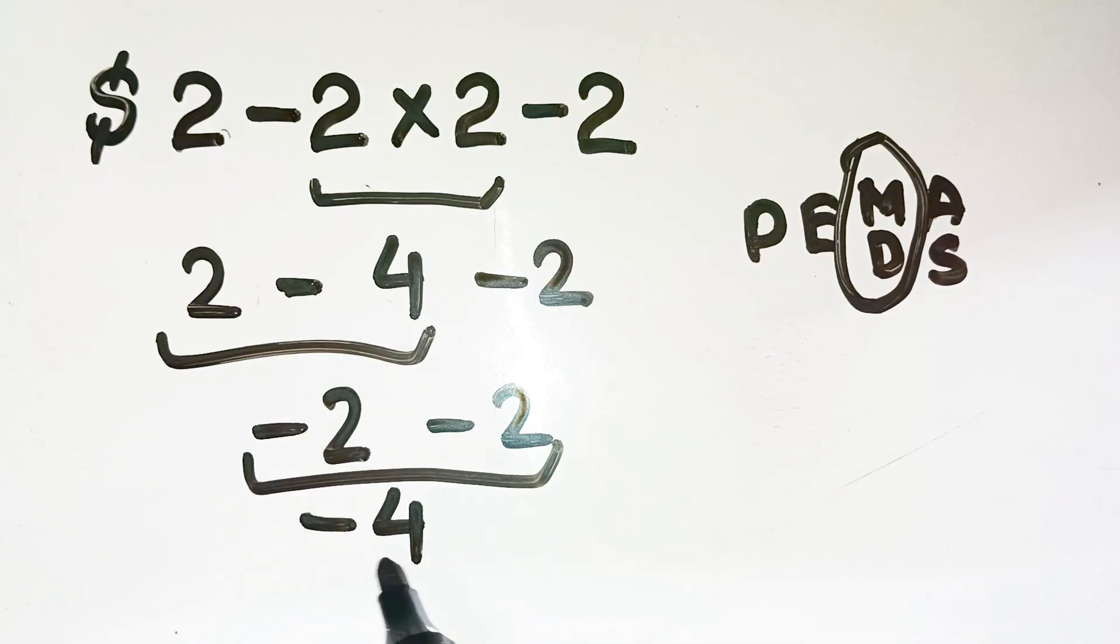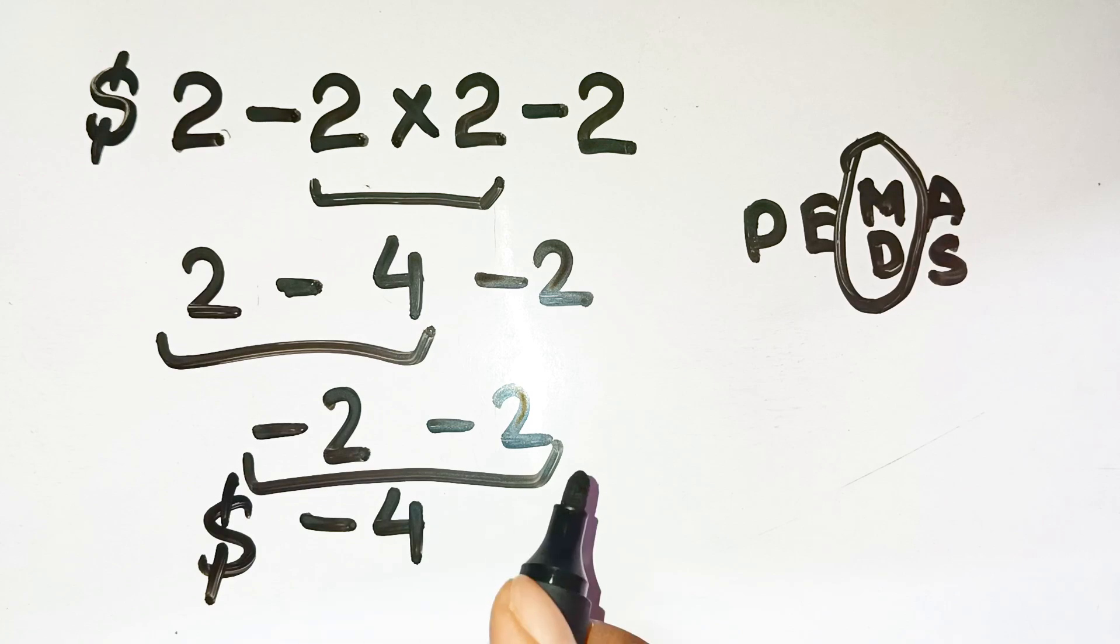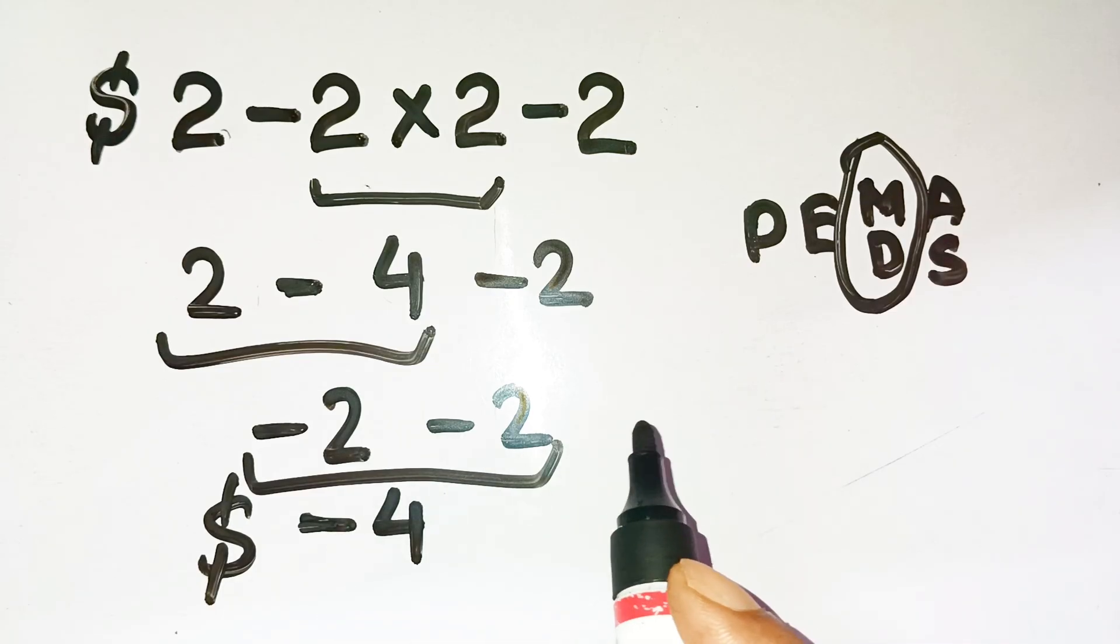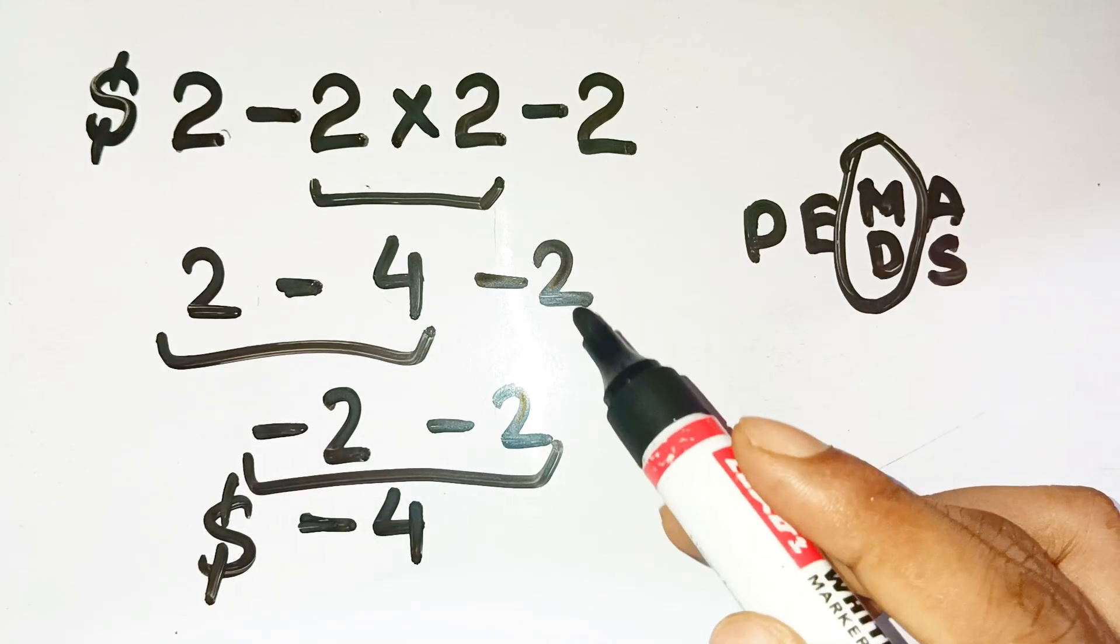It's such a small difference, just like in finance, where missing one tiny step can turn profit into loss. A misplaced minus sign or ignoring the sequence and the whole outcome flips. So next time you face something like this, remember, math isn't just numbers.